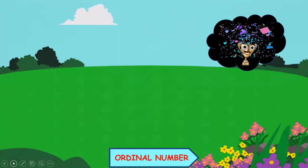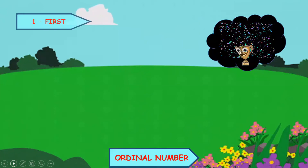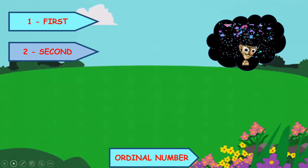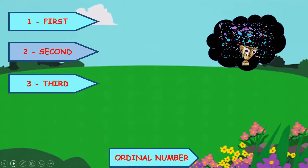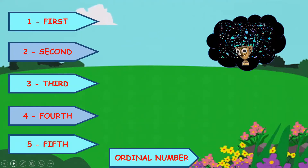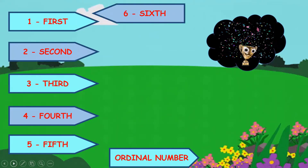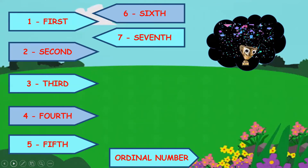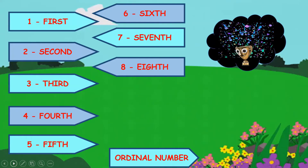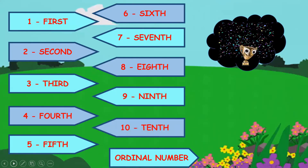There are different ordinal numbers. Some of them are: one as first, two as second, three as third, four as fourth, five as fifth, six as sixth, seven as seventh, eight as eighth, nine as ninth, and ten as tenth.